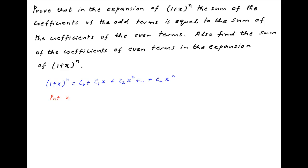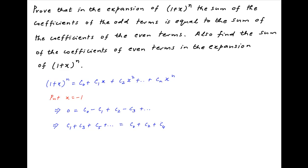Put x = -1, so the left hand side is equal to 0 and the right hand side is equal to C0 - C1 + C2 - C3 + and so on. Now move all terms with a negative sign to the left hand side; we therefore get C1 + C3 + C5 + ... = C0 + C2 + C4 + ...